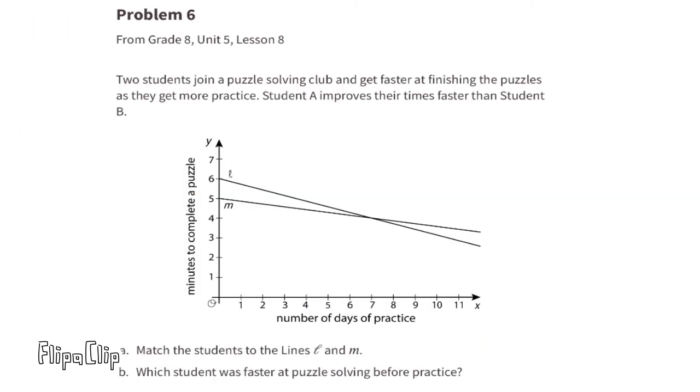Problem number 6 from 8th grade, Unit 5, Lesson 8. Two students join a puzzle-solving club and get faster at finishing puzzles as they get more practice. Student A improves their times faster than student B. A. Match the students to the lines L and M.